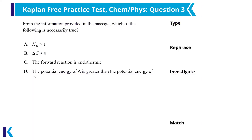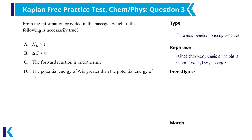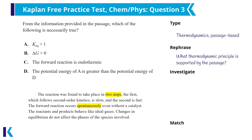Looking at question three, the first thing that stands out is the terms in the answer choices: KEQ, delta G, endothermic, and potential energy — all thermodynamic principles. The question stem simply asks what is true based on the passage, so rephrased, it's asking which thermodynamic principle is true. I had highlighted that the reaction was spontaneous in paragraph three. I recall that spontaneous processes have a negative delta G, meaning reactants have comparatively high energy and products have lower energy. Since the reaction decreases in energy going from reactant to product, the Gibbs value is negative, so I can eliminate answer choice B.